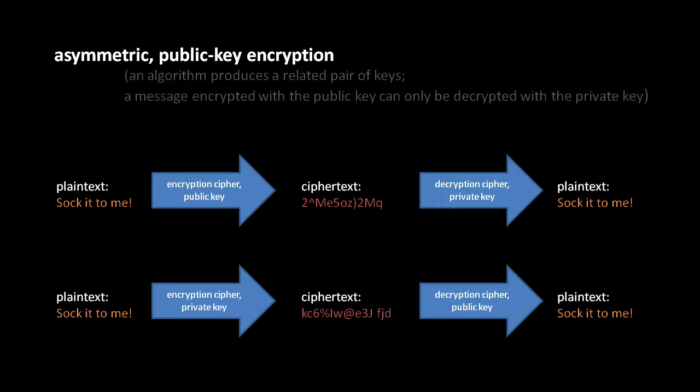The reason one key is called the public key — and this is sometimes called public key encryption — is because this scheme allows us to publicly disclose one of the keys. It's something we can publish to the world rather than keep secret. In many applications of public key cryptography, that's precisely what we want to do — we want everyone to have our public key. If I generate a pair of keys and publish the public key, anyone with my public key can encrypt something such that only I may decrypt it, because I'm the only one with the corresponding private key.